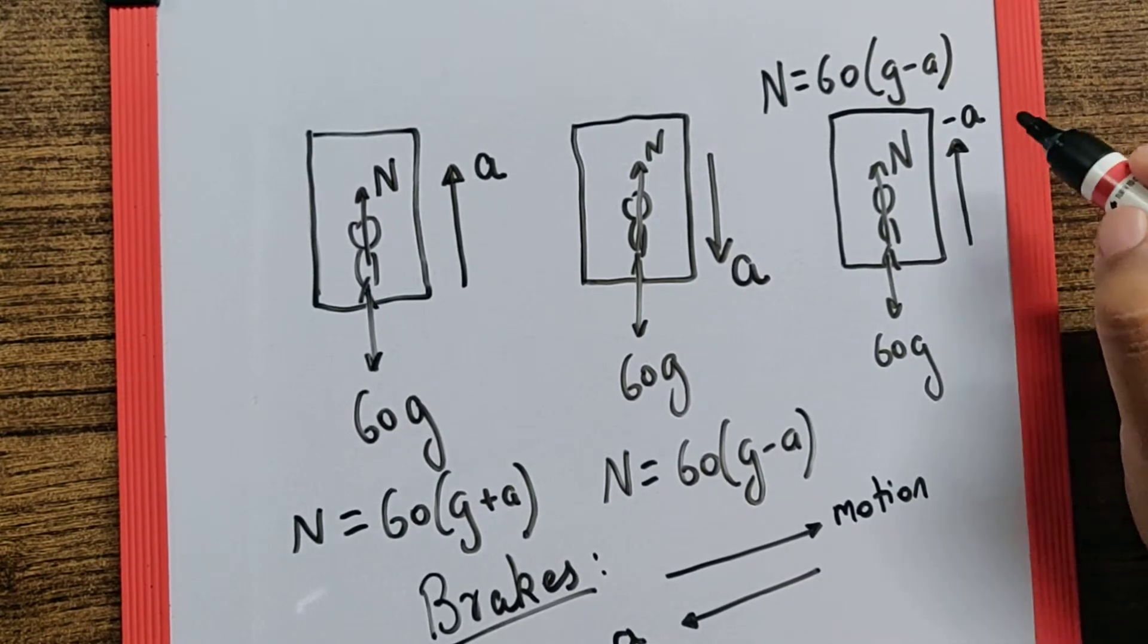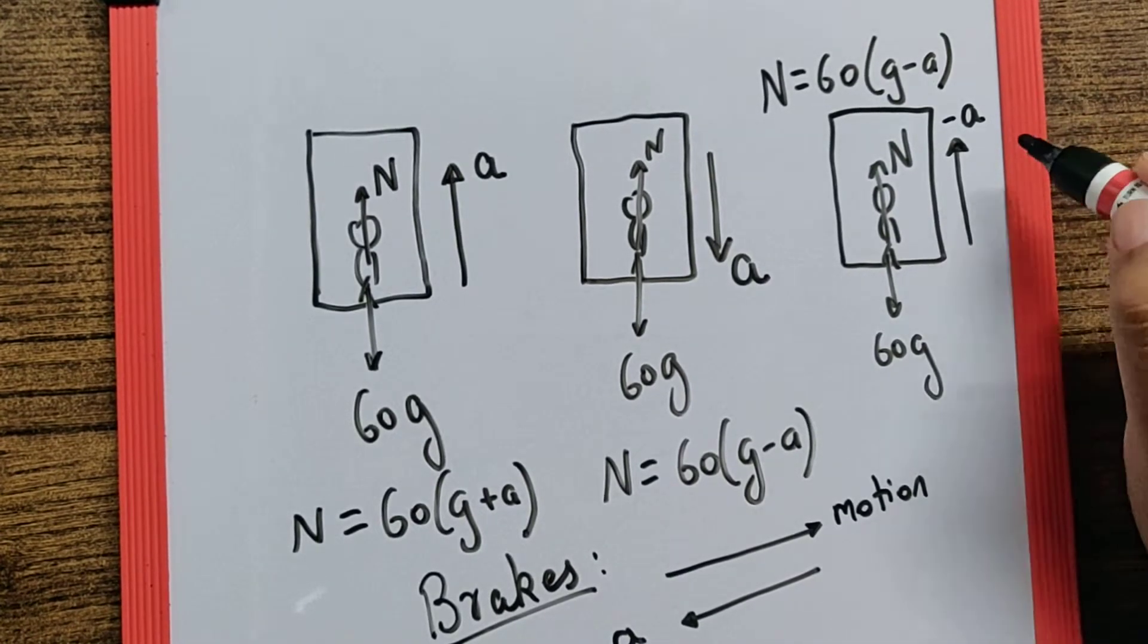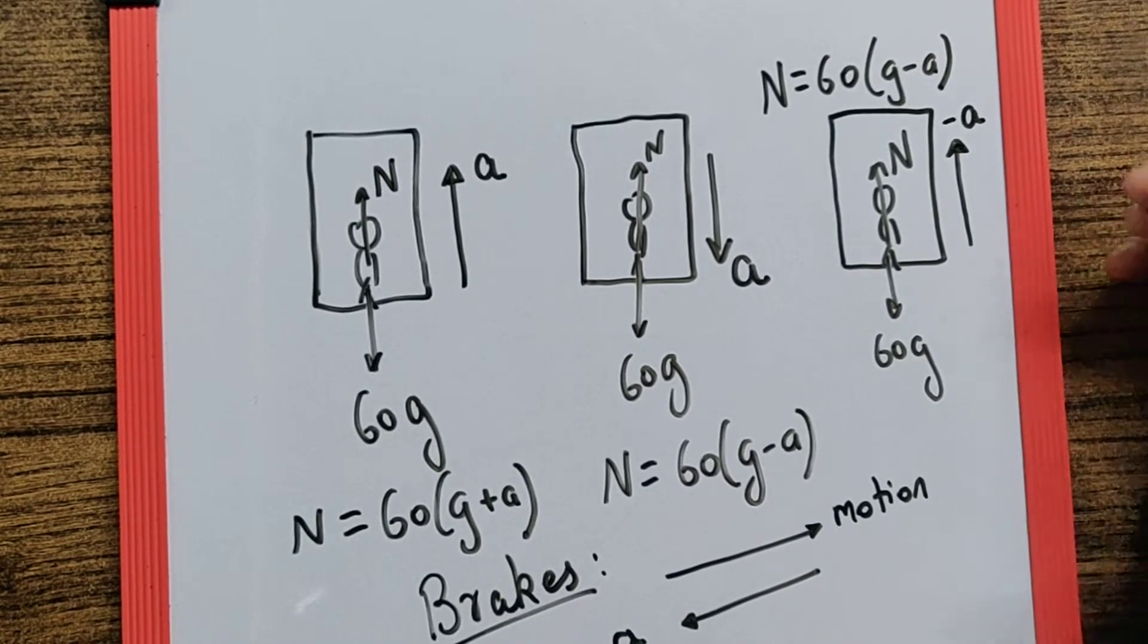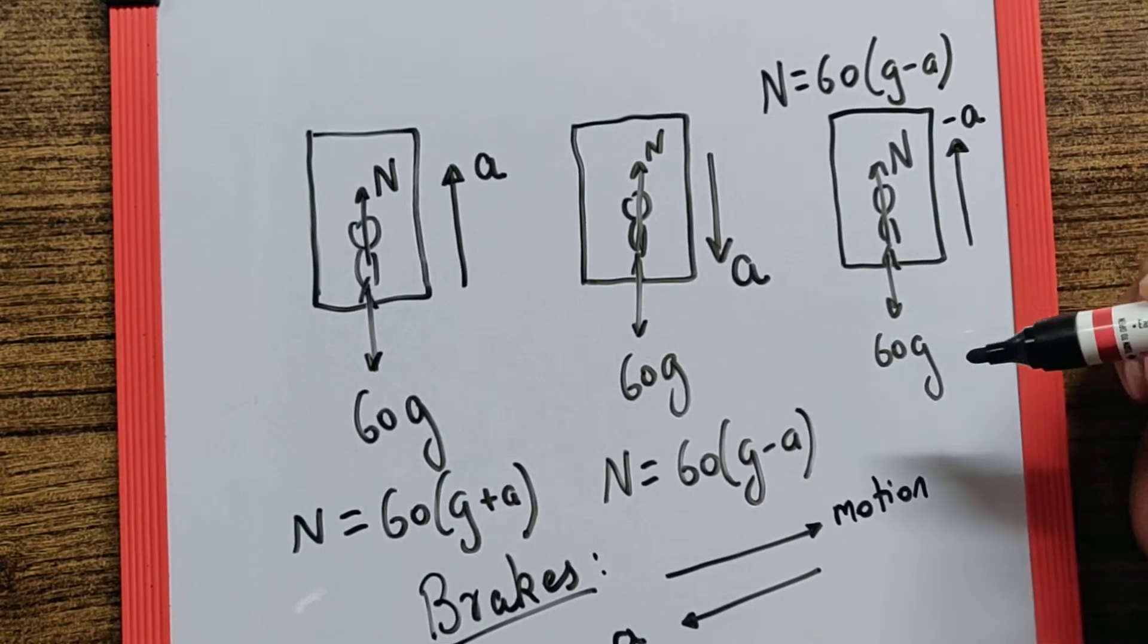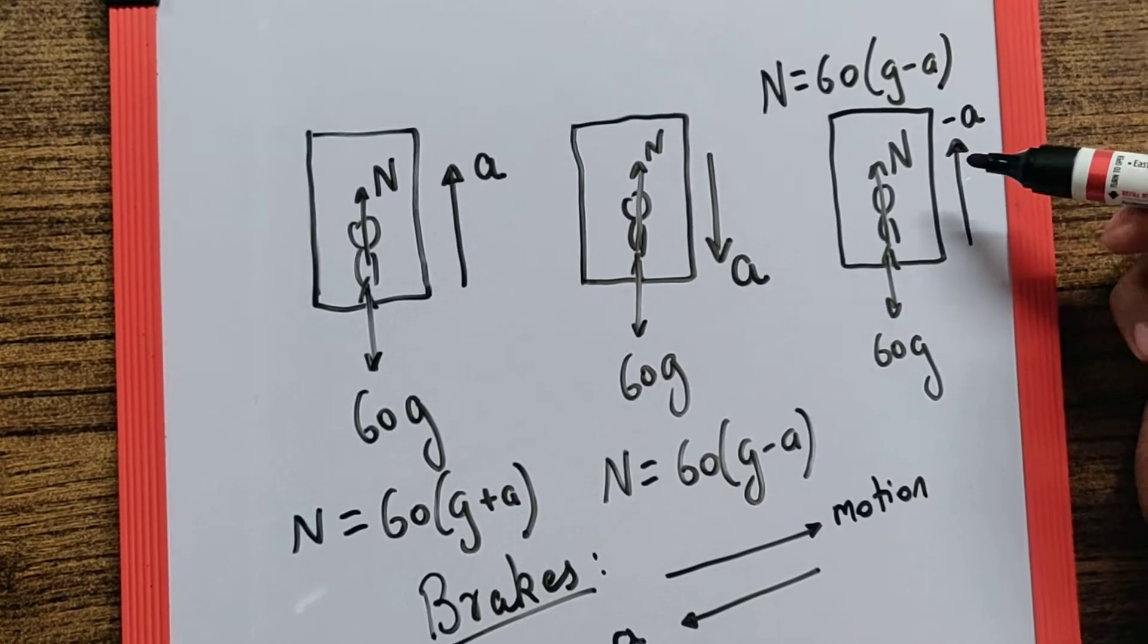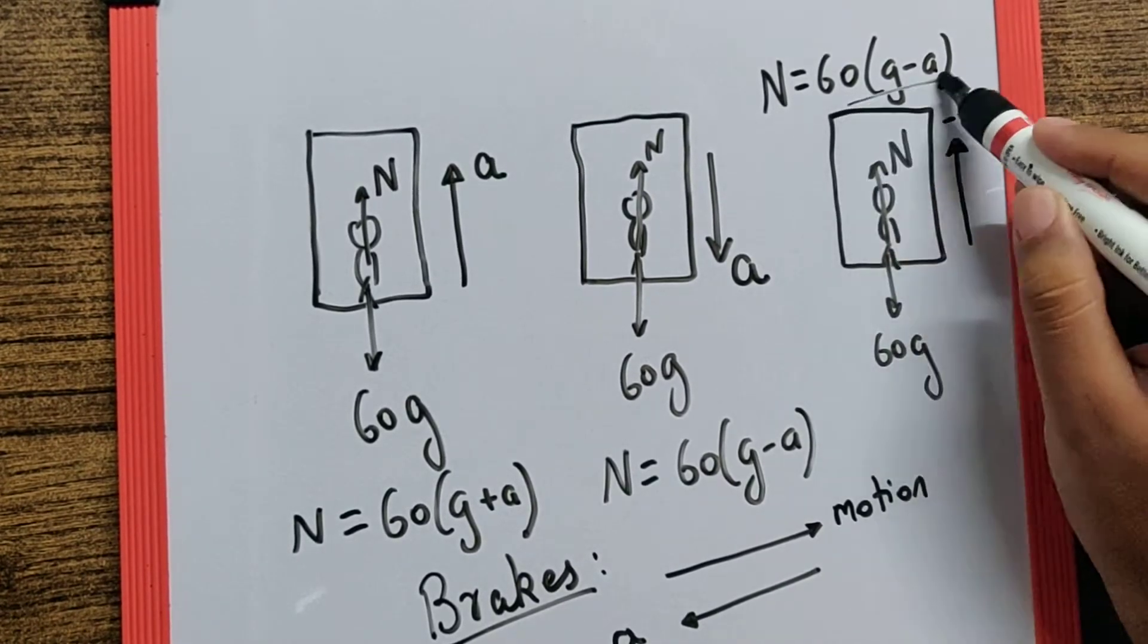So basically here when they are trying to say that the body weight is 60 kg, for a moment it changes to 50 kg, that means it falls down and then immediately comes back to the original mark.